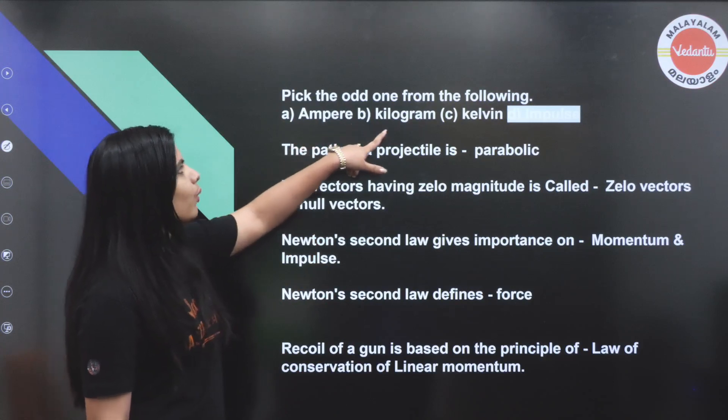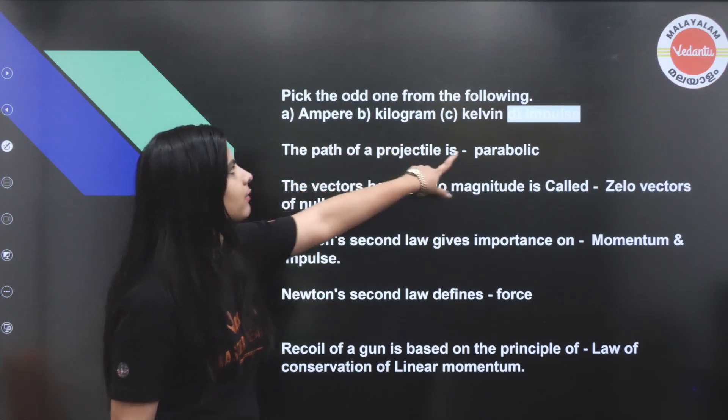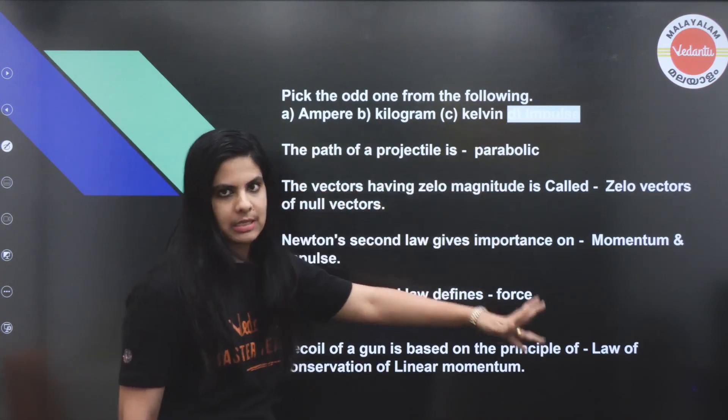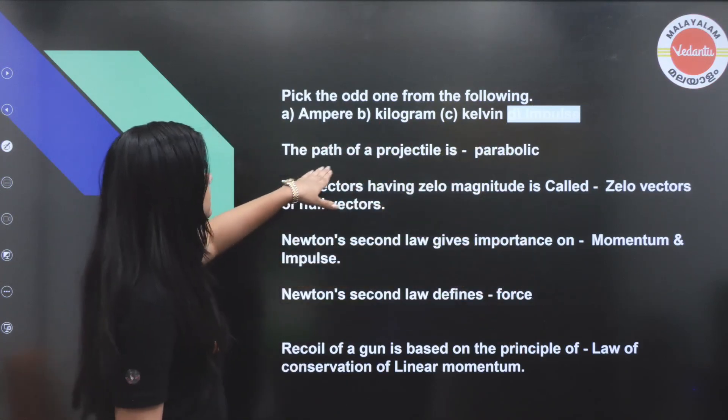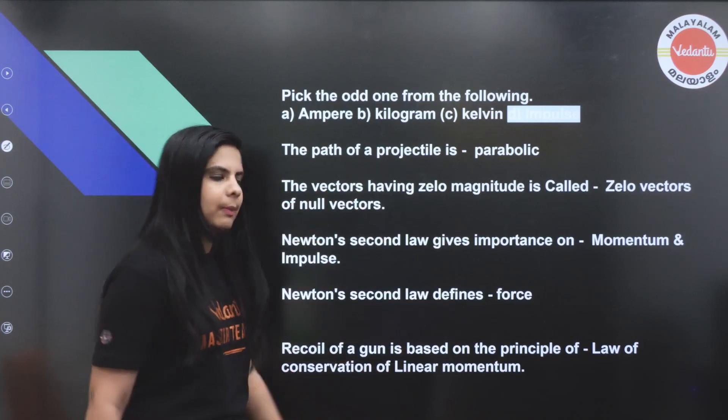Pick the odd one out from: Ampere, kilogram, Kelvin. The odd one is impulse, as the others are SI base units. Next, the path of a projectile — we know it is parabolic.